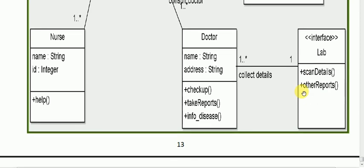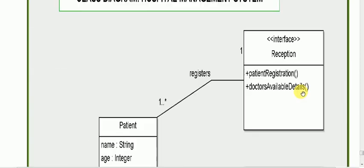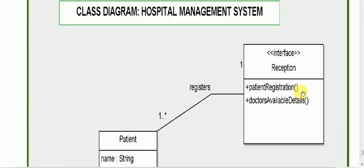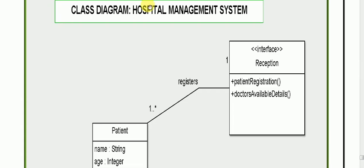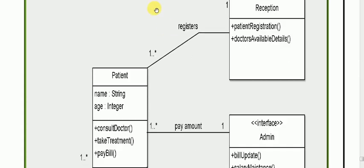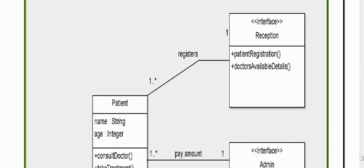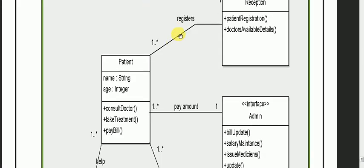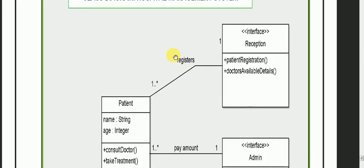We have seen which classes and interfaces are included in this particular class diagram. Now I am going to illustrate the relationships between these classes and interfaces. You can see that the patient has a one-to-many relationship.